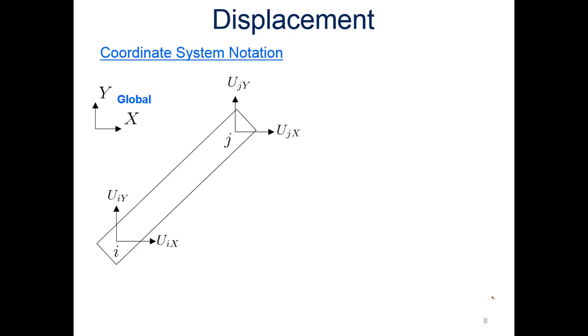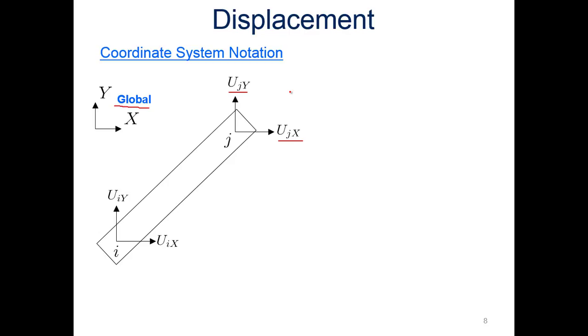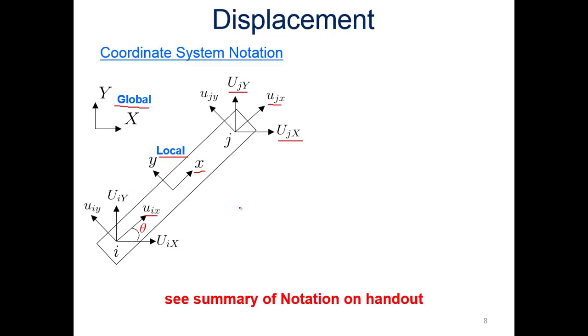Here's the overall global system. You can see global X and Y. Y is vertical, X is horizontal. We'll have some displacements of our nodes globally, so capital U is used for the global displacement. The J node has both an X and Y component, same thing at the I node on the other end. If we look at the local system, we're going to have the X component along the axis of our member, and the Y component in the other direction.